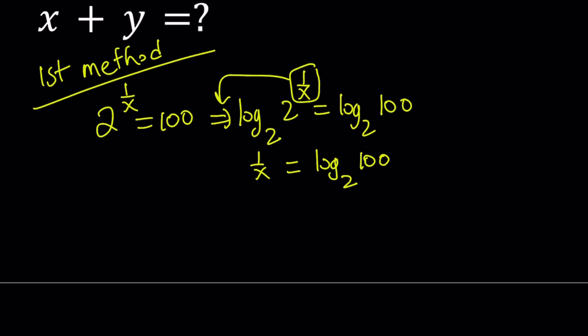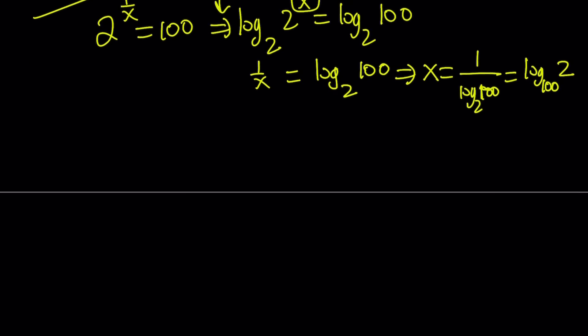Now we can flip both sides to find x. We have a really interesting property of logarithms: we can switch the 100 and the 2 around. So x equals log base 100 of 2.